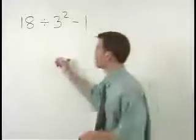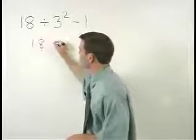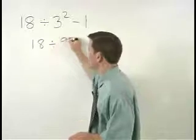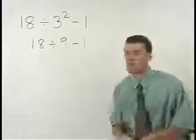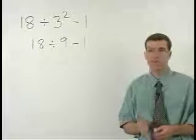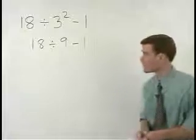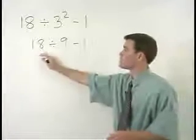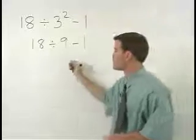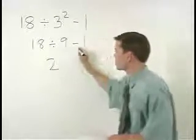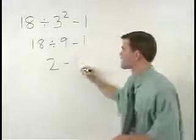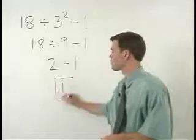So our next step reads 18 divided by 9 minus 1. Since multiplication and division come before addition and subtraction, the next thing we do is divide 18 by 9, which gives us 2. Bring down your minus 1, and 2 minus 1 is 1.